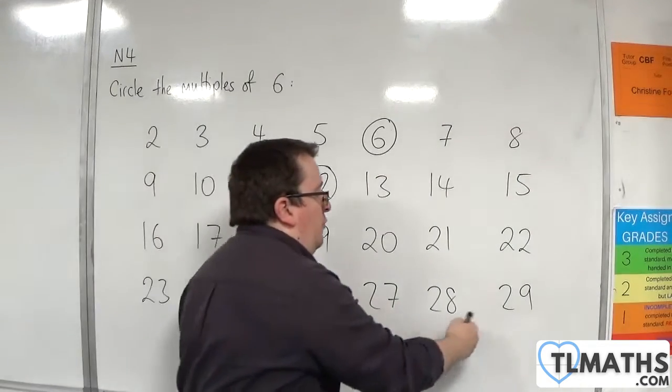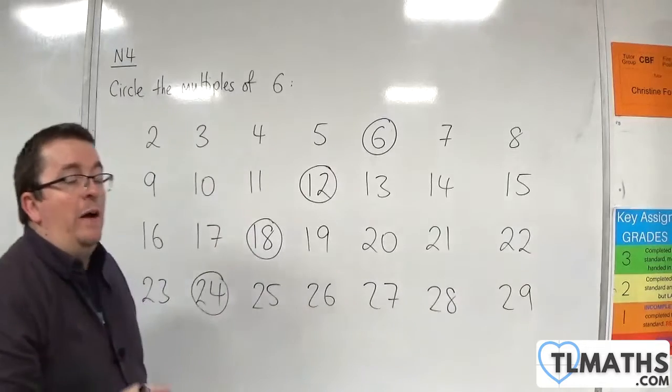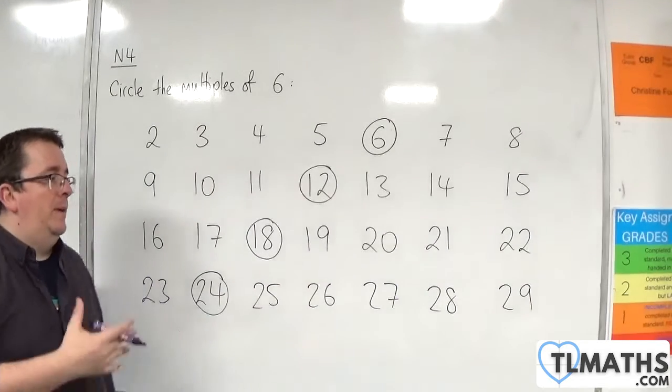If we did 1, 2, 3, 4, 5, 6, the next one, 30, that would be a multiple of 6. But it's not in our list.